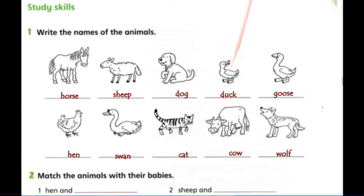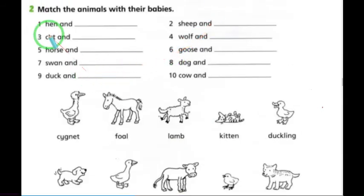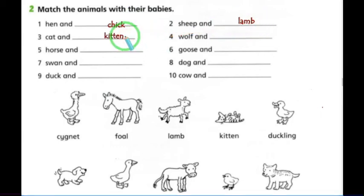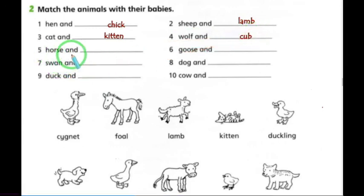Number one: hen and chick. Sheep with lamb — note that the letter B is silent after M, so it's 'lamb.' Cat and kitten. Wolf with cub. Horse with foal — that's the baby's name. Goose with gosling.